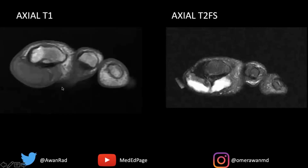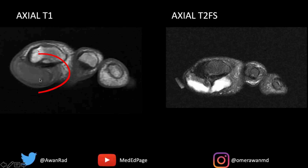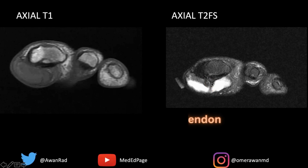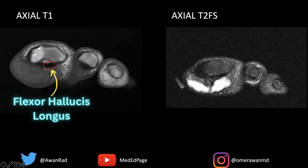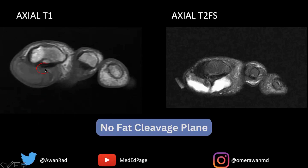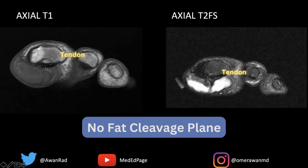Coming back to these images, notice that there's a lesion here along the plantar aspect of the great toe. It's T1 hypointense, or darker than muscle, and T2 predominantly bright — heterogeneously hyperintense to muscle — but there are some areas of dark, hypointense signal. Notice that it's intimately associated with this tendon. This black oval structure is the flexor hallucis longus tendon, and there's no fat cleavage plane between this tendon and the lesion on either T1 or T2 weighted images.